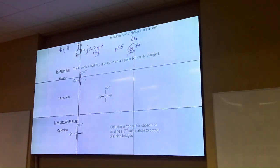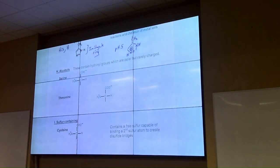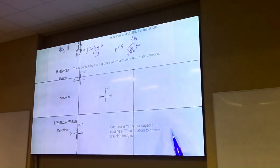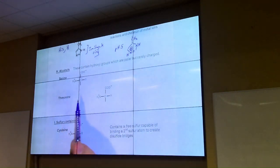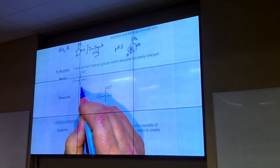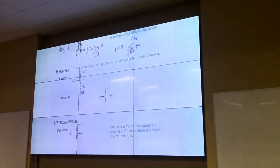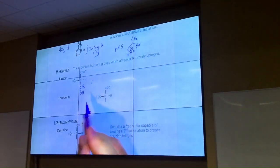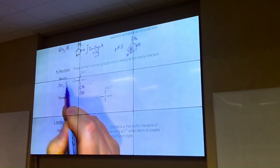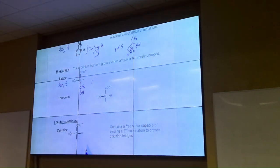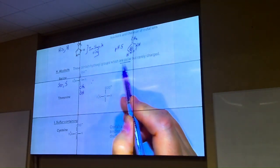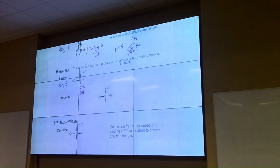That brings us to the alcohols. We did talk about one of the alcohols last time. The alcohol amino acids include phenylalanine and tyrosine, plus serine and threonine. Serine is just the alcohol of alanine — if you've learned alanine, serine should not be very challenging. The three-letter code is SER and the one-letter code is S. Polar? Yes. Interacts just fine with water? Yes — just like methanol.